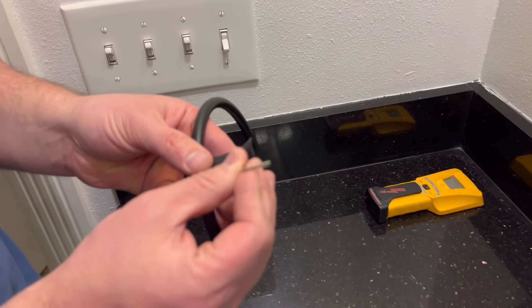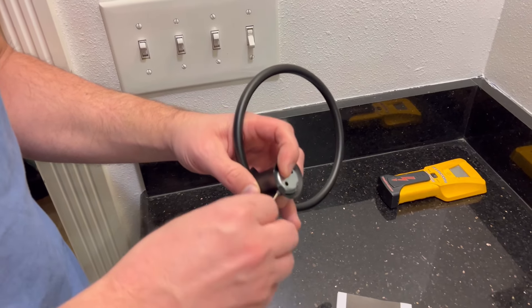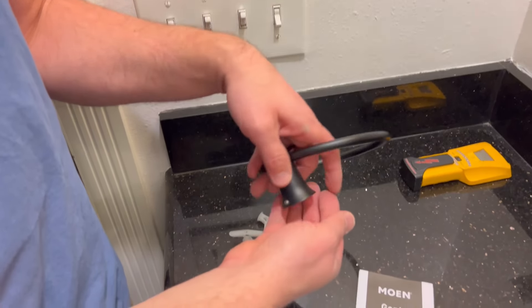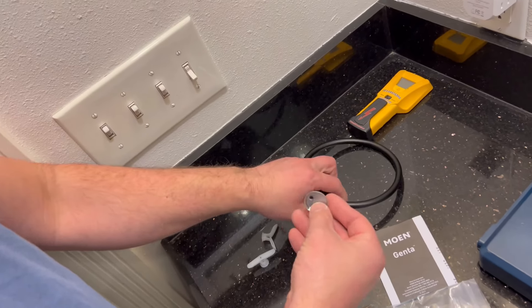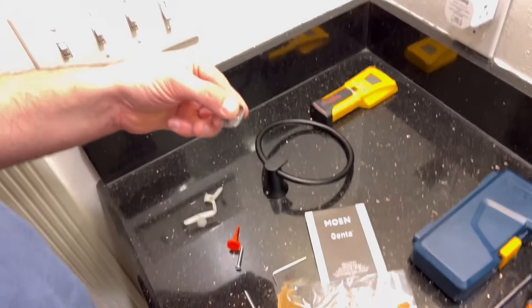This kit does provide the allen wrench for the set screw that is used to hold the mounting bracket into the fixture itself, like that. And it does have an up arrow key to make sure you put it upright. Next is the drilling.